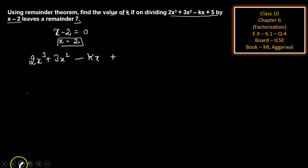Now when we put the value of x, we will get the remainder. So 2 × 7³ + 3 × 7² - k × 7 + 5 = 7.